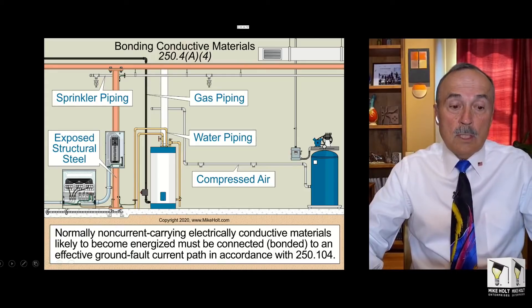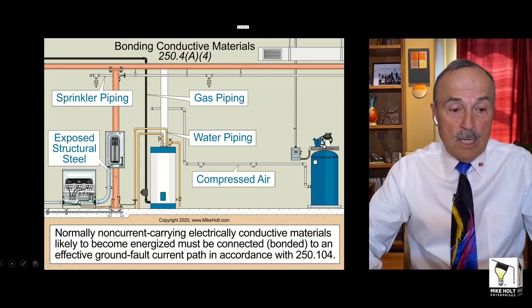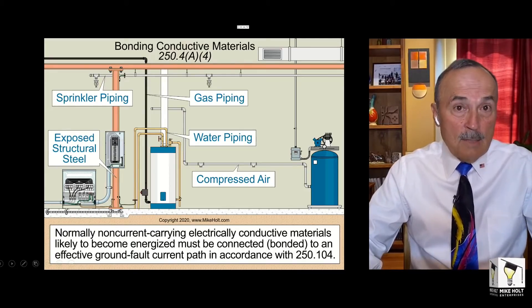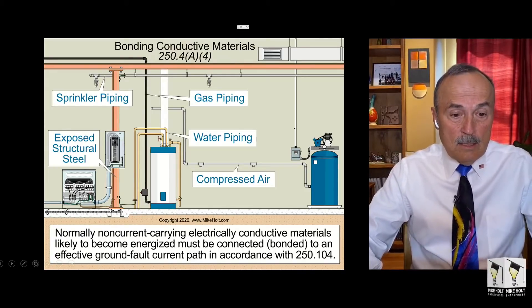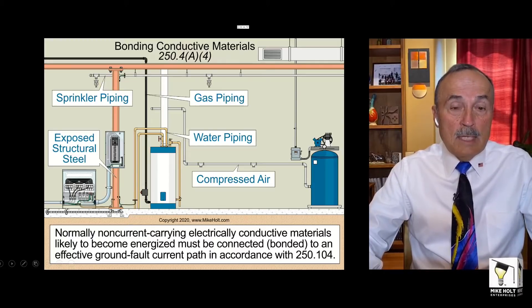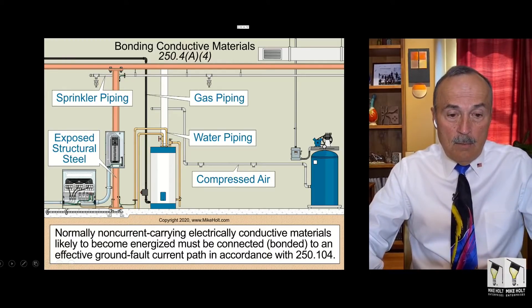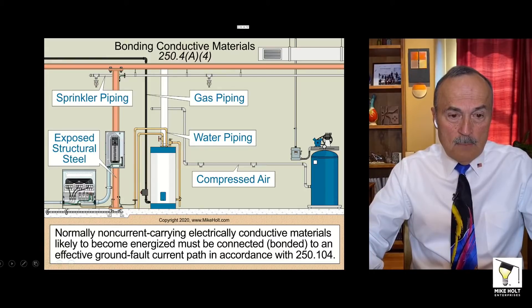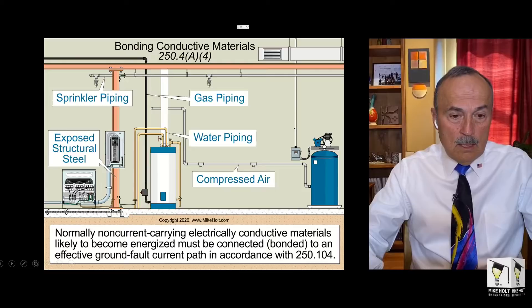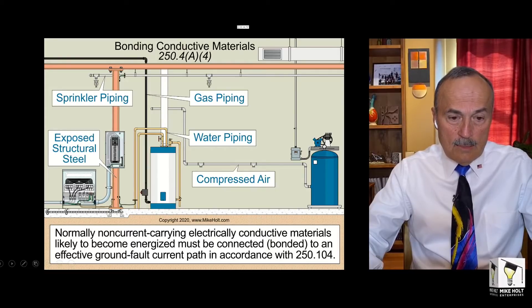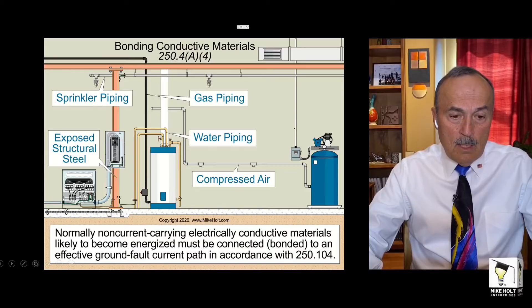A transformer is likely to become energized. A panel is likely to become energized. A steel column is likely to become energized. But this gas piping over here is not likely to become energized because there's no electricity going to it.